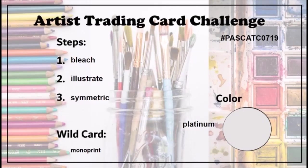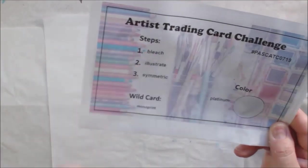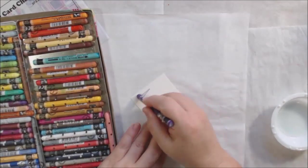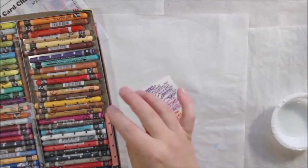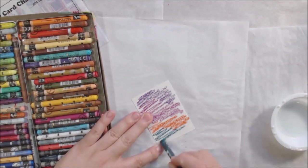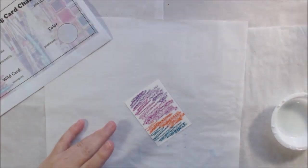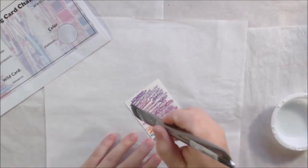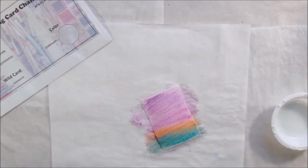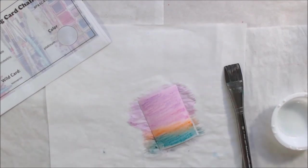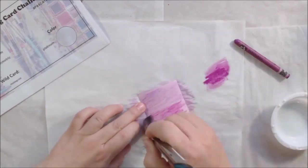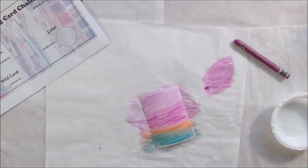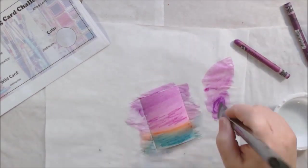Okay, now for the artist trading card challenge. The first step is bleach but before I can use any bleach I need to have some color on my card. This is 140 pound watercolor paper cold press and it's been cut in a three and a half by two and a half inch rectangle which is the size of a trading card, also the size of a baseball card that you could trade or a Pokemon card. That's the idea of artist trading cards - they're the same size as those cards that we traded as children.